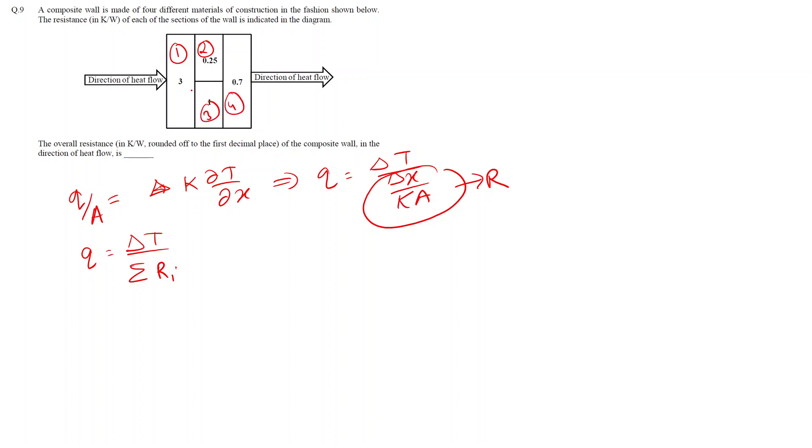From the diagram, we can see that blocks two and three are in parallel, whereas block one, this entire thing, and block four are in series. Using this resistance concept, we can write for two and three that are in parallel: